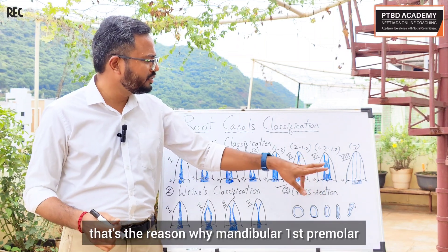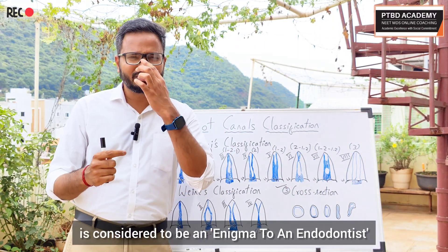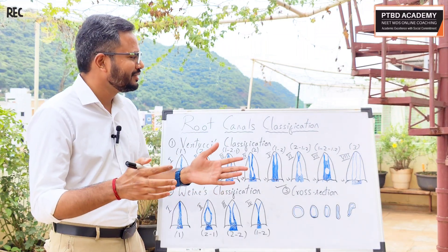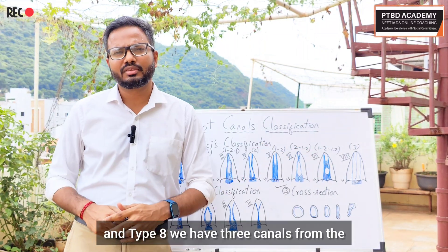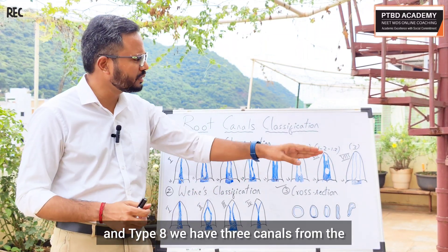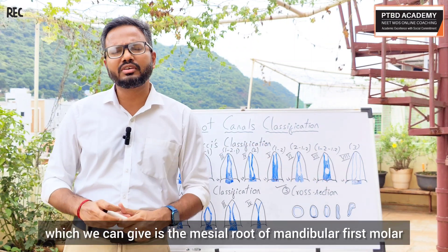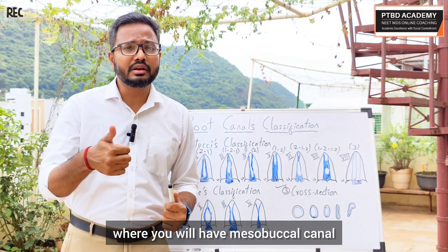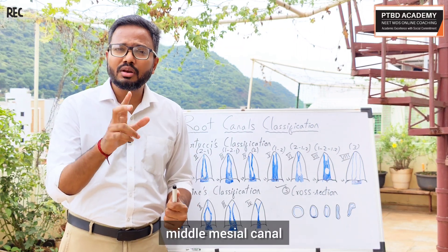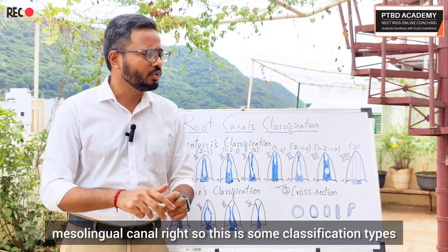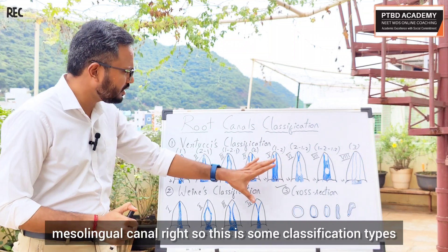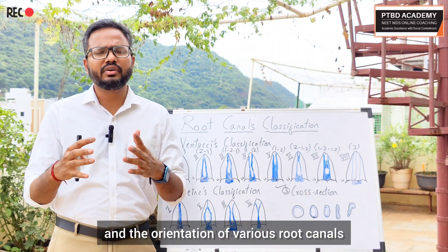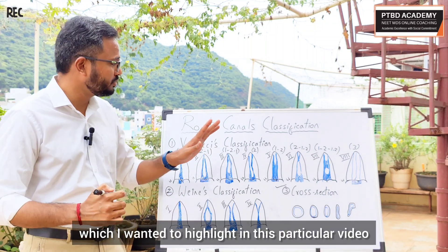Type 7 — 1-2-1-2 configuration — is seen in the mandibular first premolar, where one canal bifurcates into two, merges back into one, then bifurcates into two again. This is very complex, and that is why the mandibular first premolar is considered an enigma to an endodontist. Type 8 has three separate canals from the pulp chamber to the apex — the best example being the mesial root of the mandibular first molar, with the mesiobuccal canal, middle mesial canal, and mesolingual canal.